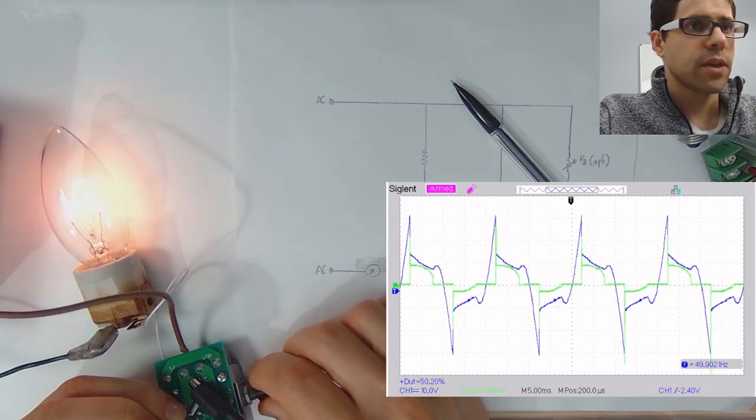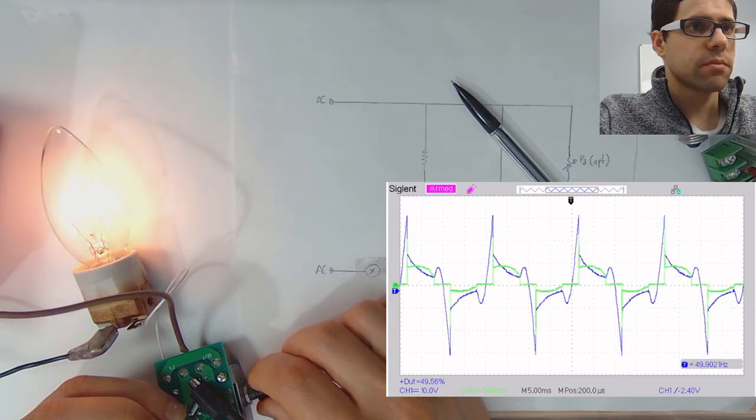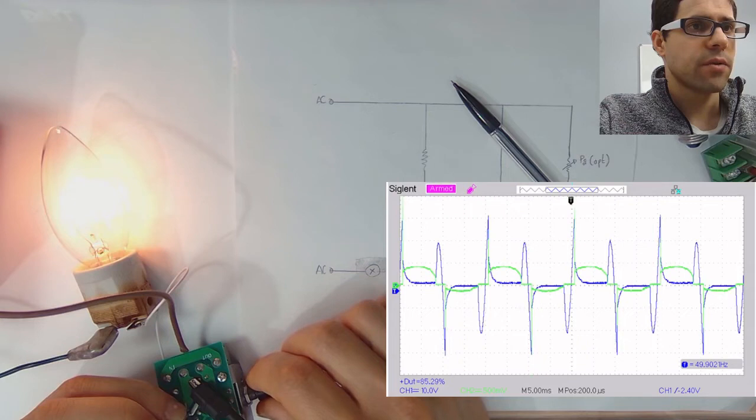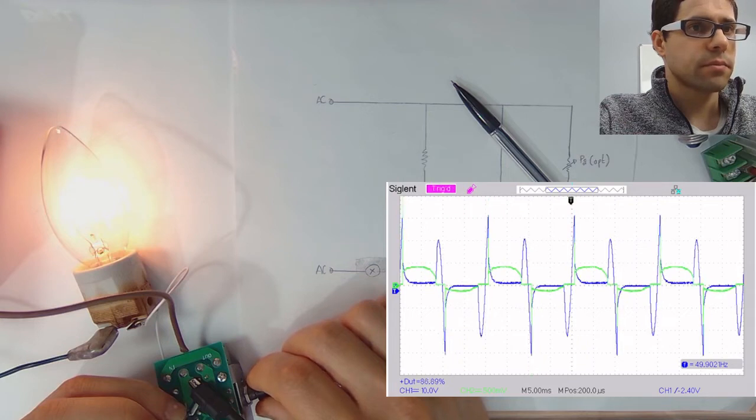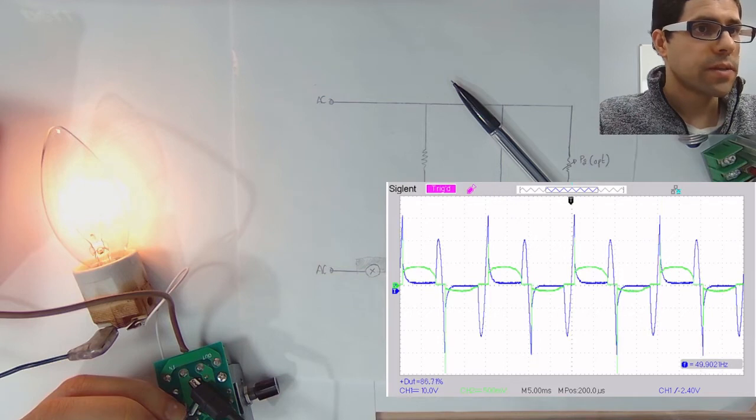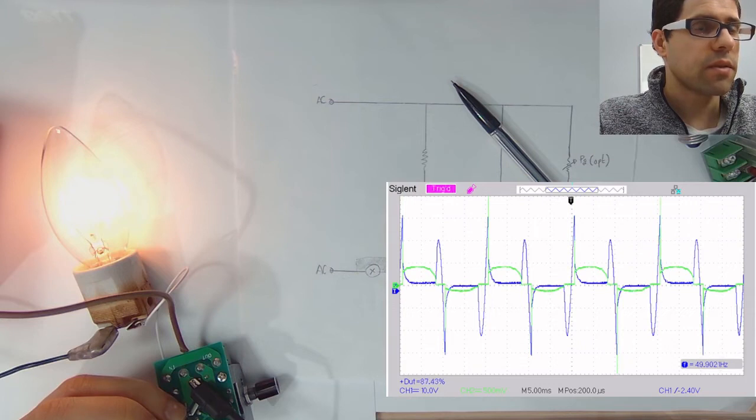We can start to see that the diac fully discharges very quickly. We can still continue to see the peak that is generated at the moment the capacitor discharges into the gate.